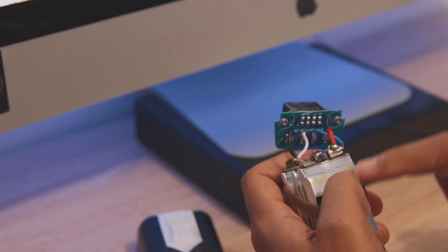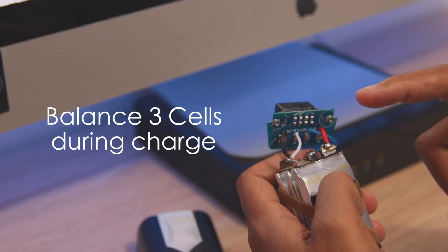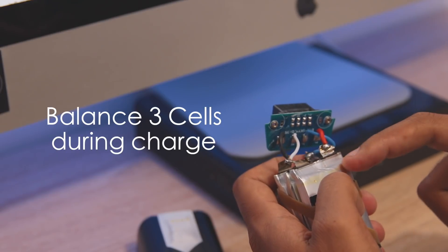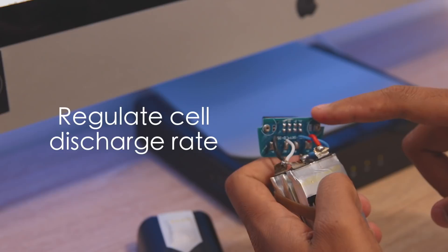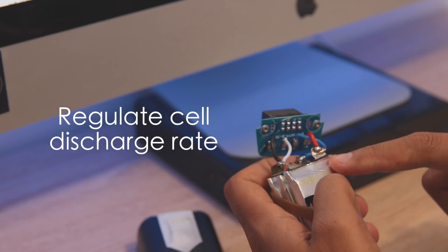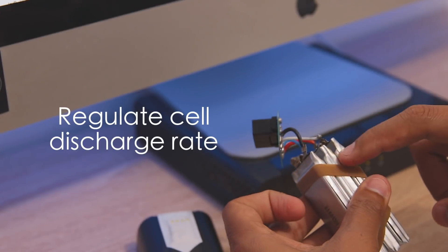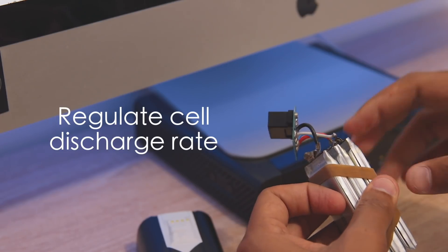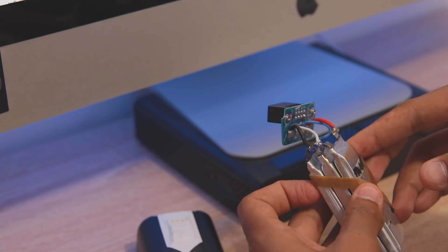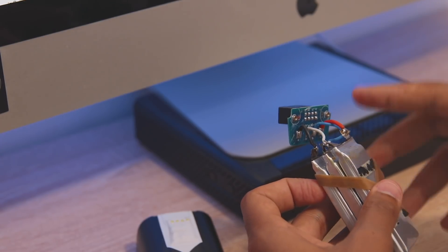What that PCB will do is balance the cells as it charges and also balance it as it discharges. So as the drone is using the battery in flight, if there is a discrepancy with any of the three cells, it will try to keep them as close as possible within the same voltages of each cell.